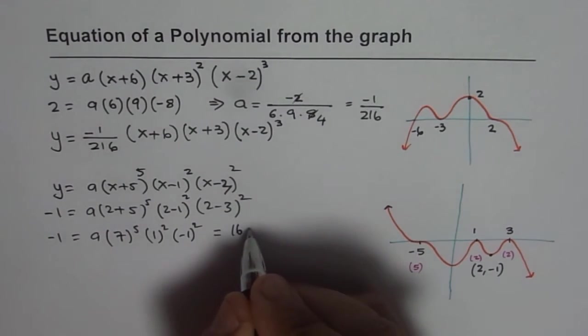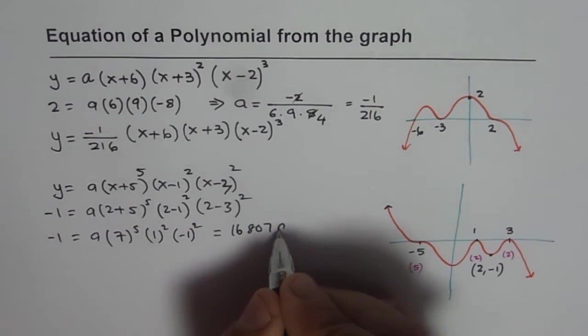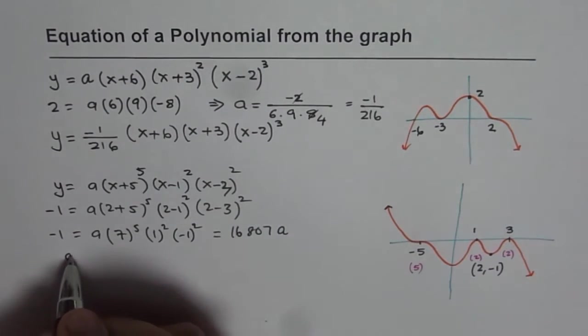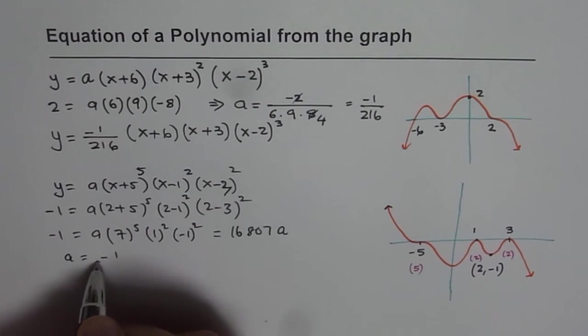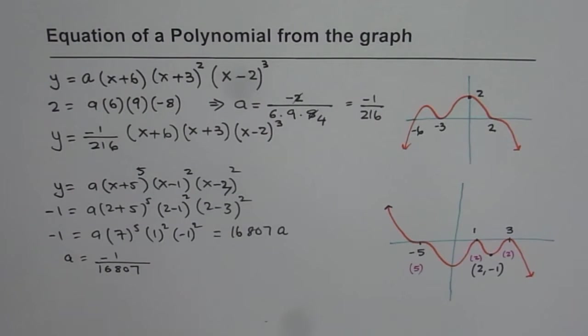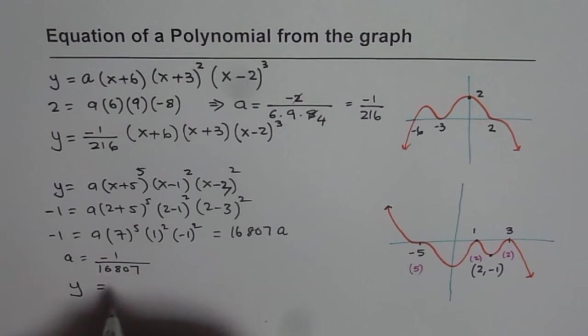So it is 16807a and therefore we get a equals to minus 1 over 16807. So that is the value of a for us. Now since we know a, we can write down our equation. Say y equals to minus 1 over 16807.